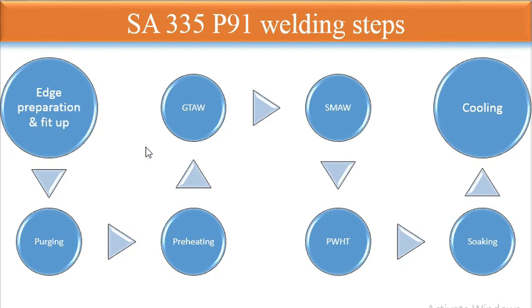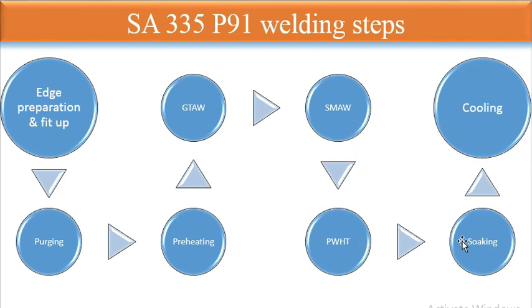The SA335 P91 welding steps are as follows: first, edge preparation and fit-up; then purging; then preheating; then GTAW — starting with the root pass, then filler and cap passes; then SMAW for subsequent passes; then post-weld heat treatment (PWHT) for stress relieving; then soaking; and finally cooling. After completing this full process, the welded joint is ready for service.